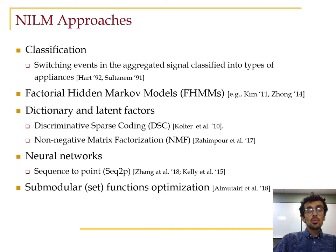NILM started as a classification method where switching events in the aggregated signal are classified into different types of appliances. Another popular approach is based on factorial hidden Markov models, where each appliance is modeled as a hidden Markov model. This class of methods is usually not scalable and requires either adding restrictive assumptions or relaxing constraints to solve the problem. Another line of work is dictionary learning or matrix and tensor factorization, where latent factors or bases are learned from appliance-specific training data. The main problem with these models is the assumption that the training and test data have a common factor.